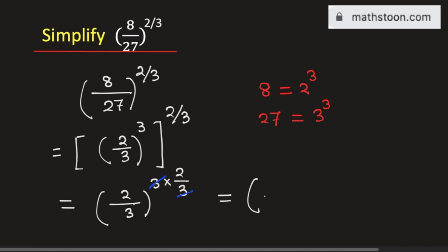That is, we will get (2/3)². Now simplifying, we will get 2²/3², which is equal to 4/9.